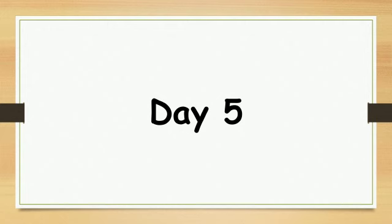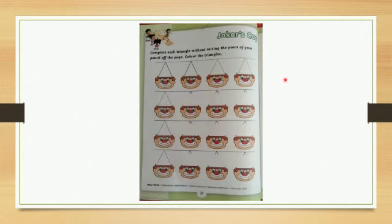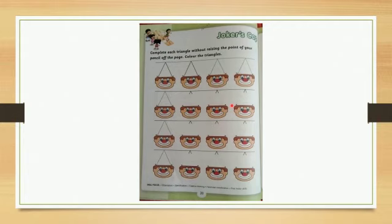Day 5. On page 20 in your literacy skill workbook, you have to complete each triangle without raising the point of your pencil off the page, and you need to color the triangles. You are supposed to draw and complete the triangles with colors without taking your hand off the page.